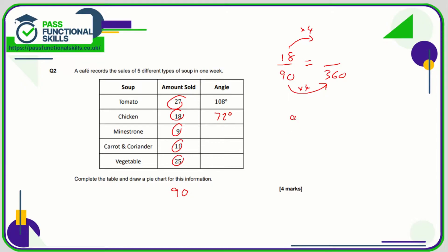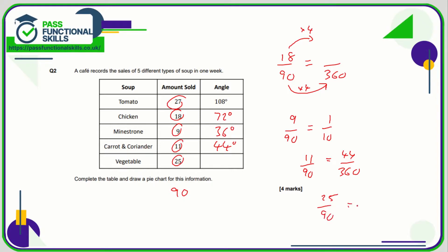Minestrone is 9 out of 90, which is 1/10. One tenth of 360 is 36 degrees. Carrot and coriander is 11 out of 90, and since the bottom is times 4, the top is times 4 as well: 44 degrees. For the last item, 25 out of 90 — multiply the top by 4: 25 times 4 is 100 degrees.